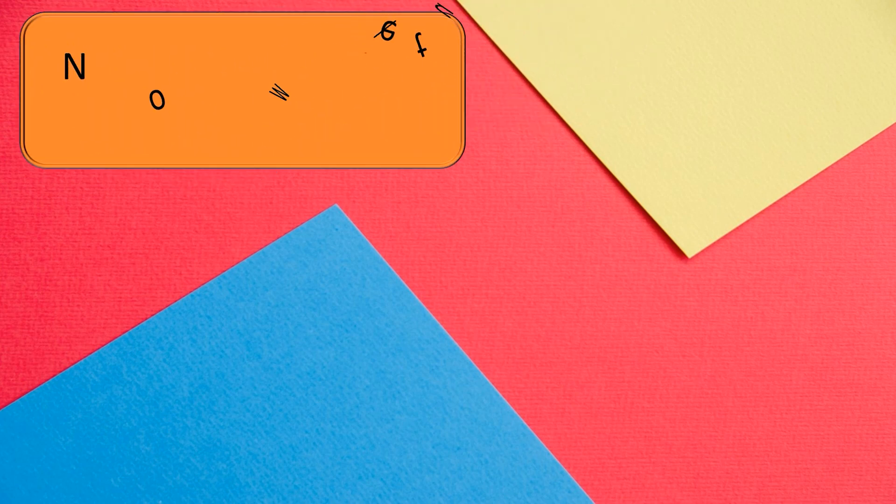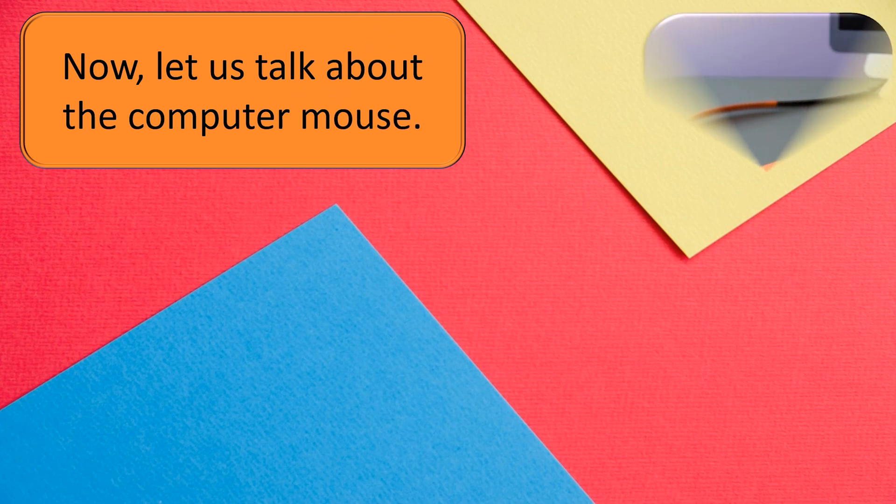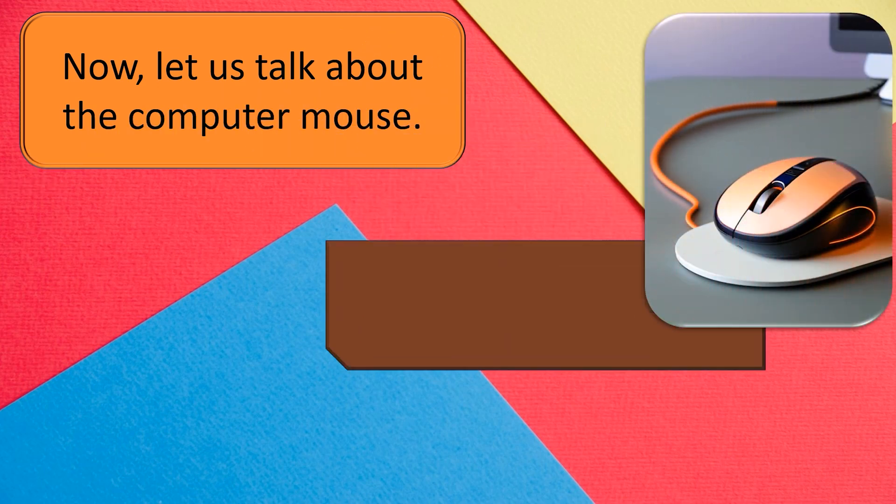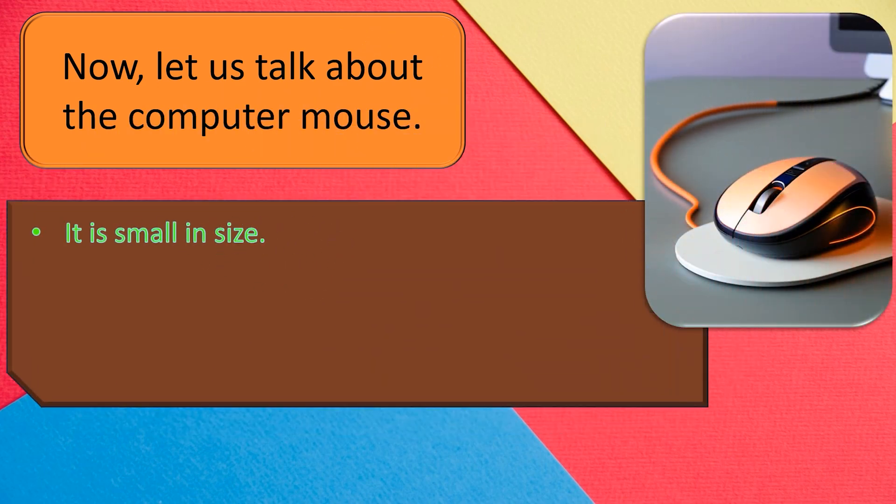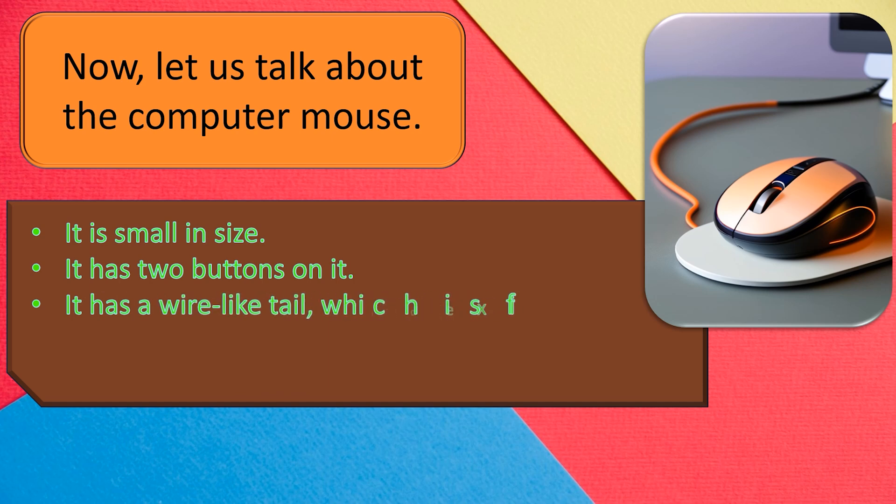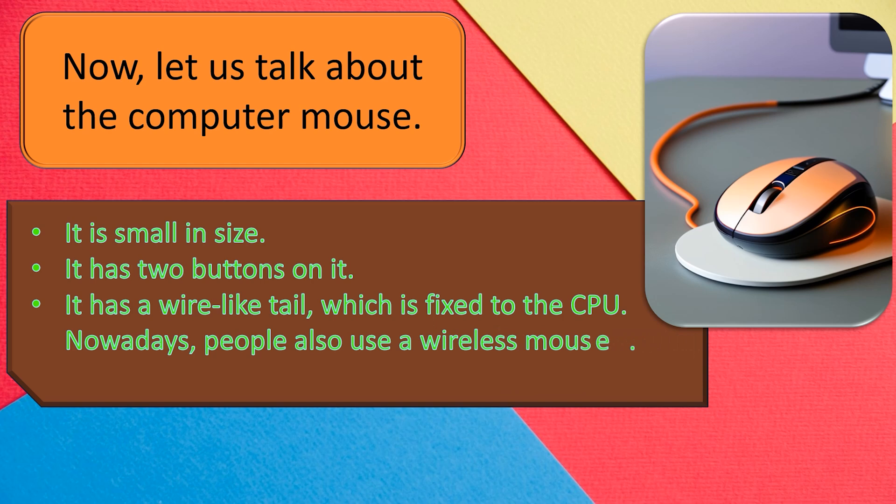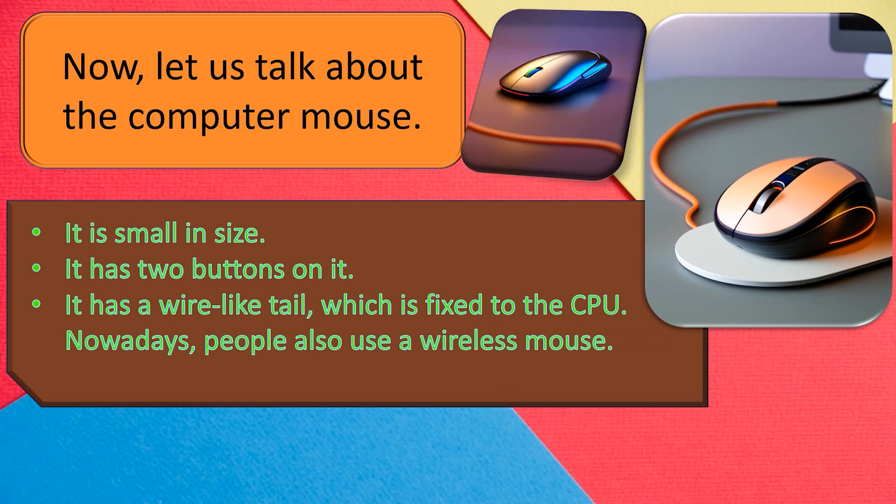Now, let us talk about the computer mouse. It is small in size. It has two buttons on it. It has a wire, like tail, which is fixed to the CPU. Nowadays, people also use a wireless mouse. It is kept on a mouse pad.